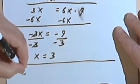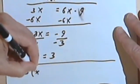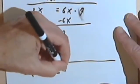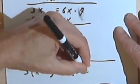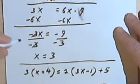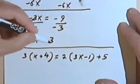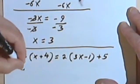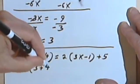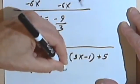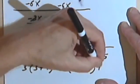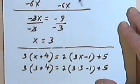So I'll rewrite my problem. 3 times x plus 4 equals 2 times 3x minus 1 plus 5. I'll plug the 3 in everywhere where I see an x. So I've got 3 times 3 plus 4 equals 2 times 3 times 3 minus 1 plus 5.